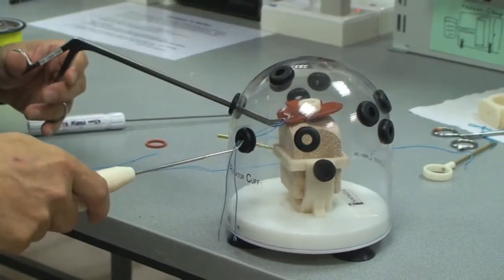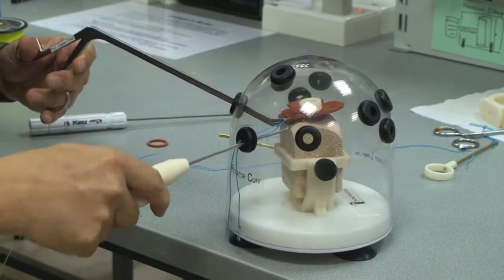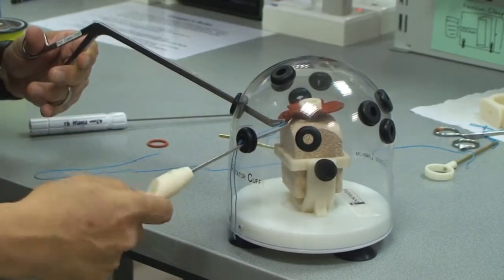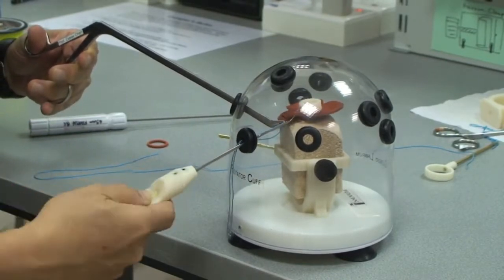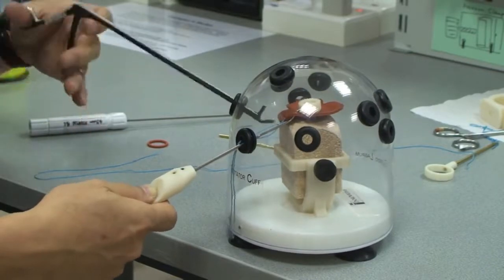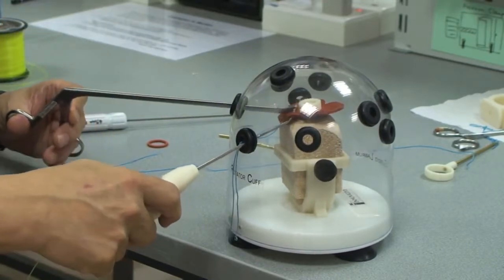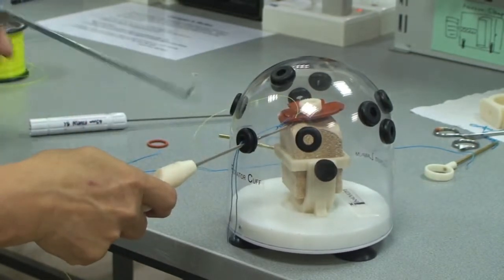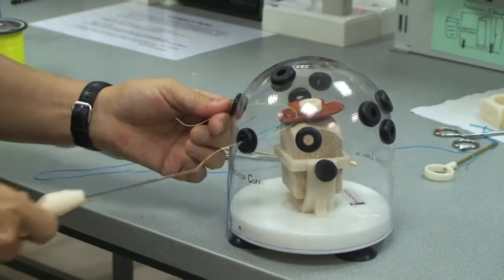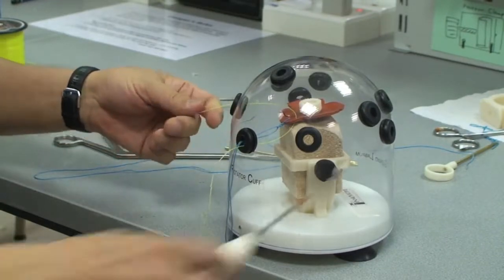Pass the needle through the cuff, which I'm doing now. Then I expose the monofilament, use a grasper, pull it through through the posterior portal. Remove the suture passer.